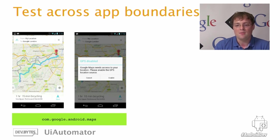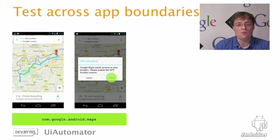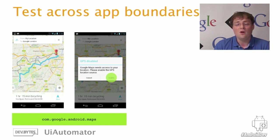Here are some screenshots of the new Google Maps app. Let's say we want to write a functional test for this scenario using the instrumentation framework. What we would do is start the activity on the left, click on the navigation icon, wait for the dialog to appear, then click the enable button. But as of now, there was no easy way to actually turn GPS on. The problem is that the instrumentation framework is limited to testing within its target package only. With UI Automation, this restriction no longer holds, and now we can test the complete user flow.